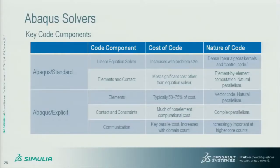To understand our GPU strategy, it's helpful to look at the components of the codes — I'm talking about Standard and Explicit, not the CFD code, though what we're doing with Standard and Explicit we're also doing on the CFD side. Looking at the key components of Abacus Standard, there's a linear equation solver that is a key performance component. The cost of it increases with problem size. It is essentially compute done by dense linear algebra kernels, with a bunch of control code managing how data flows through those kernels.